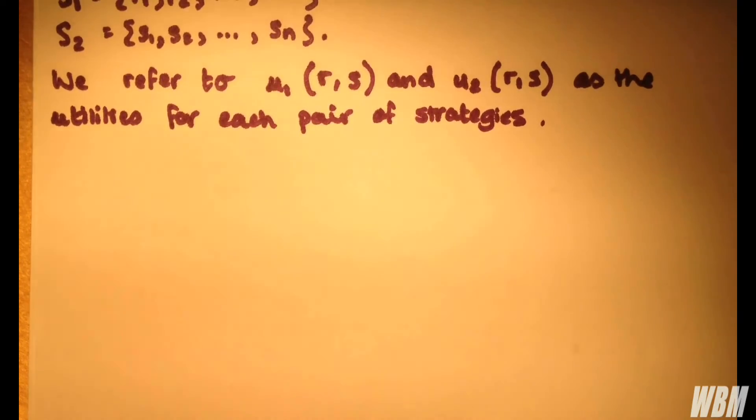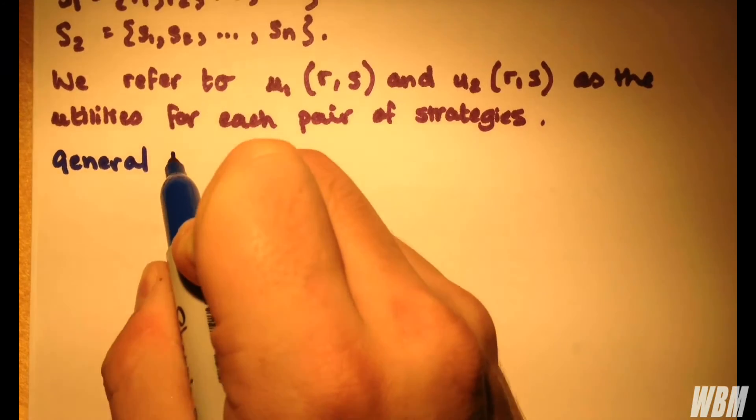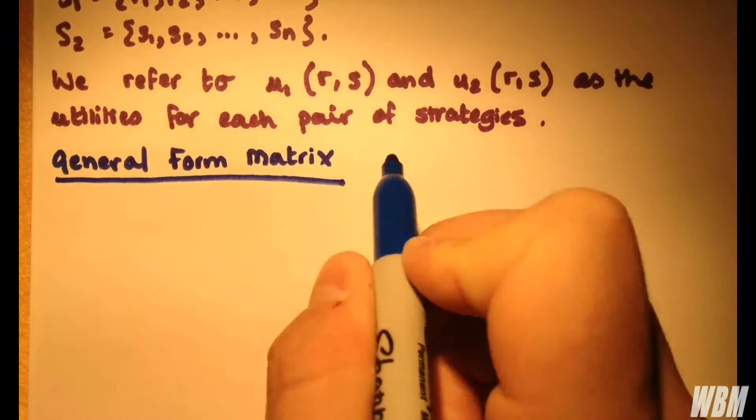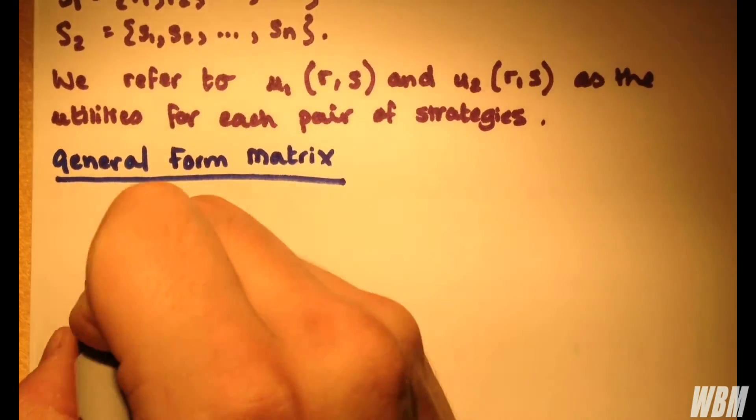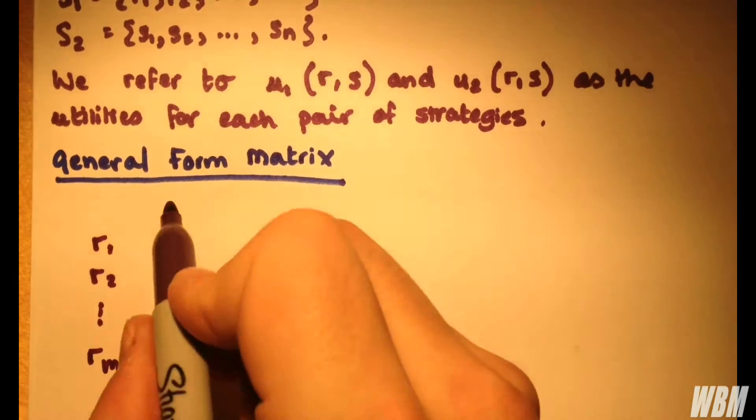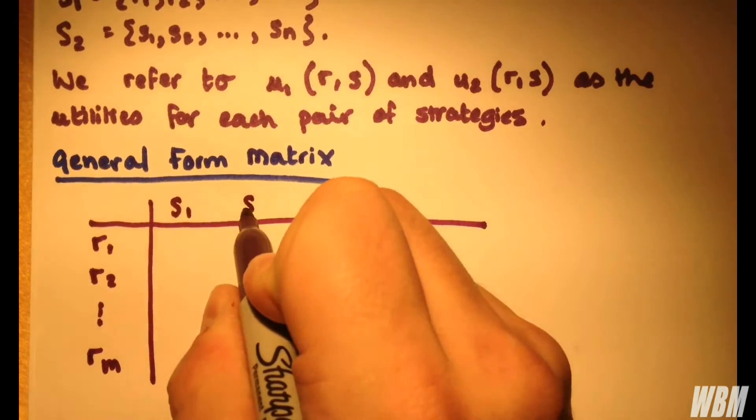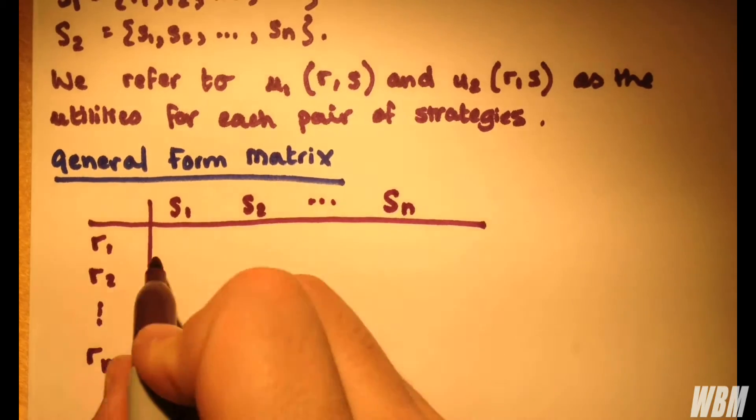So now we're going to illustrate this game by drawing what's known as a matrix, a general form matrix because we're not going to put any numbers into it. We're going to have player 1 strategies down here: R1, R2, all the way through to Rm, and player 2 up here: S1, S2, all the way through to Sn. For each pairing of strategies, we'll have a different utility.